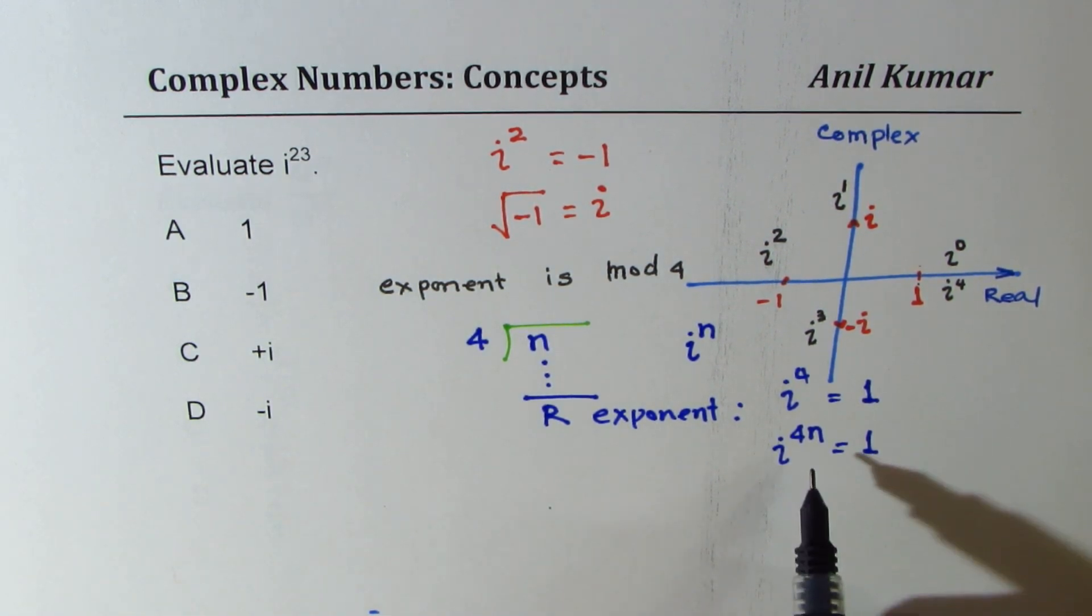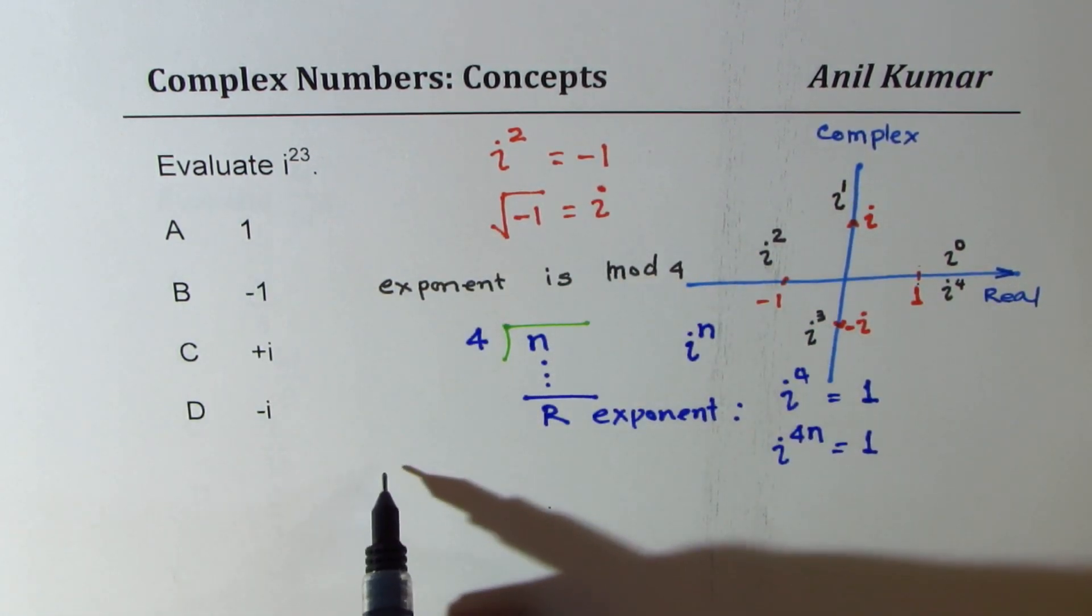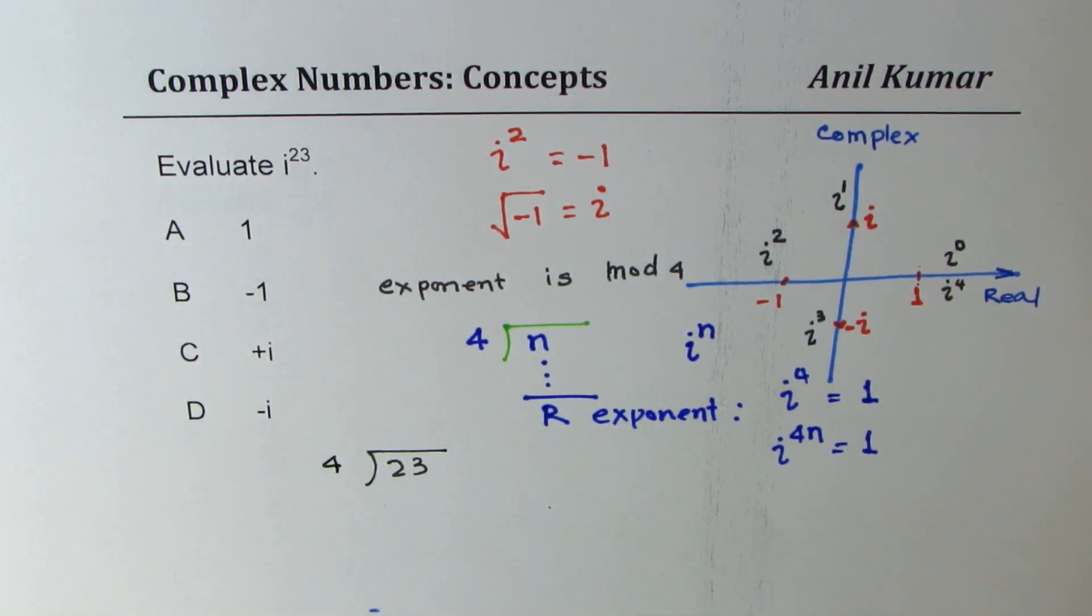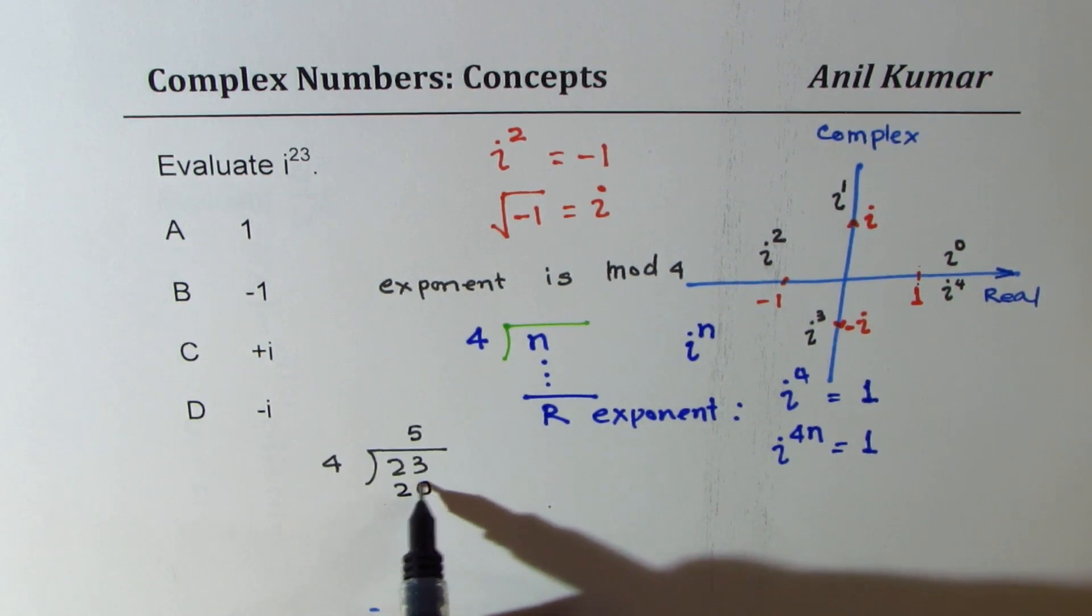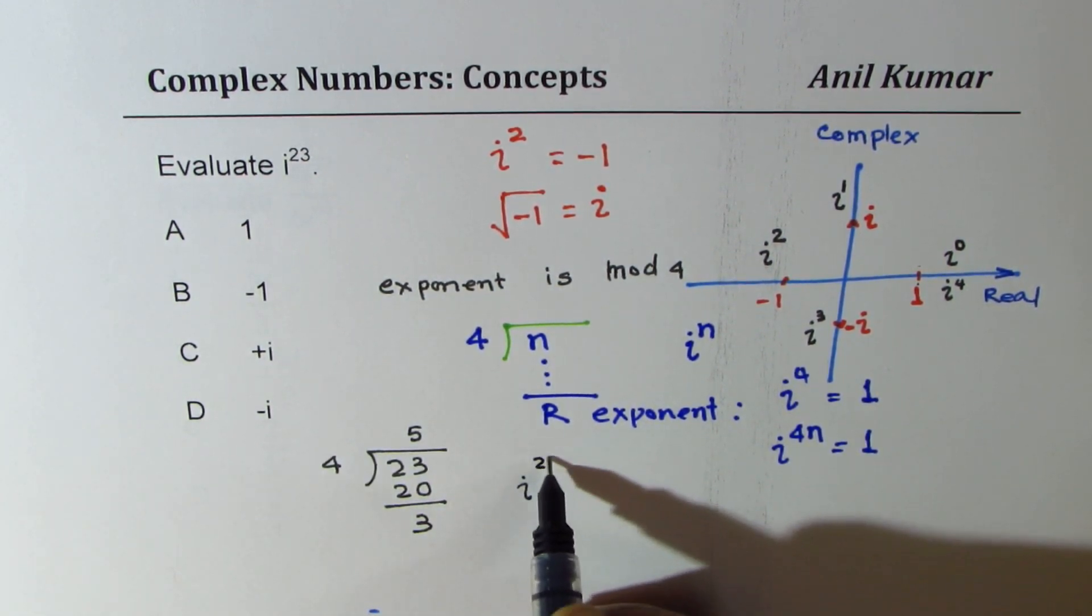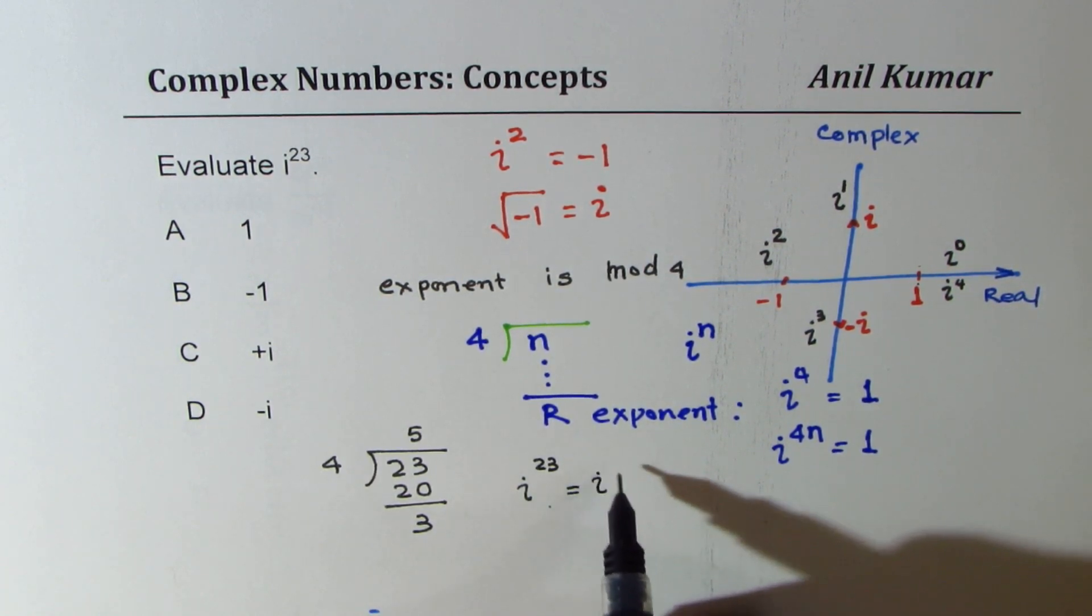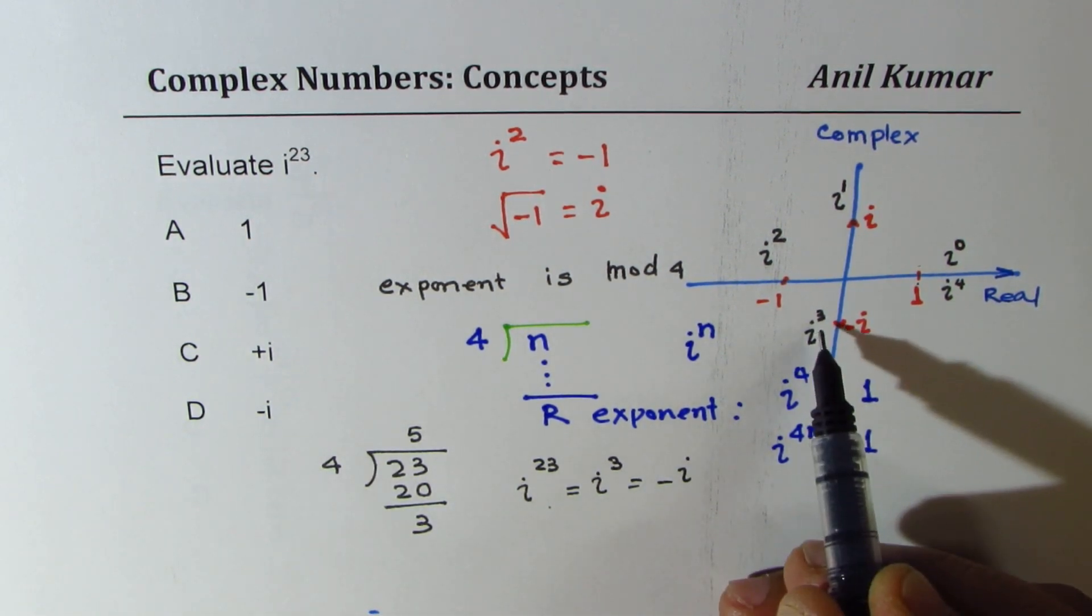So the very first one here is i to the power of 23. If I divide 23 by 4, what do I get? 5 times 4 is 20, I get remainder 3. So i to the power of 23 is same as i to the power of 3, which is minus i.